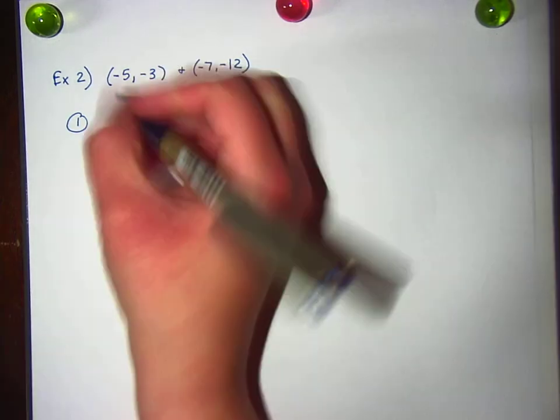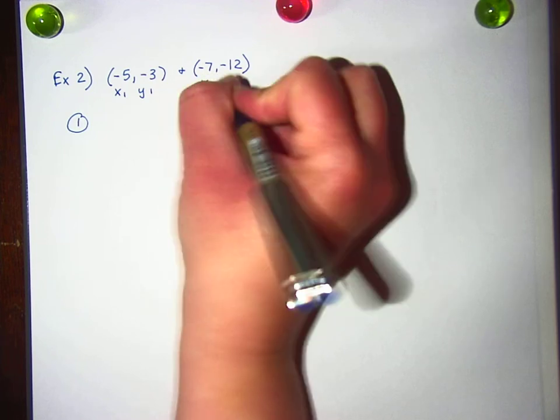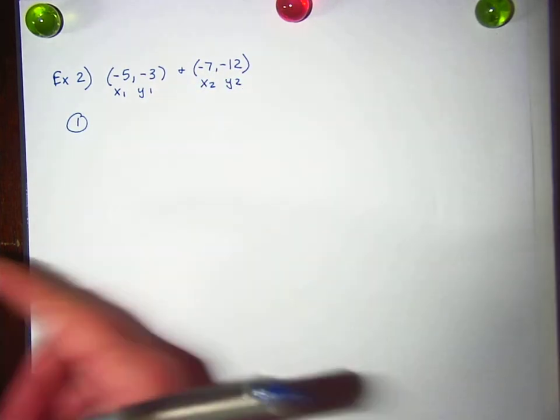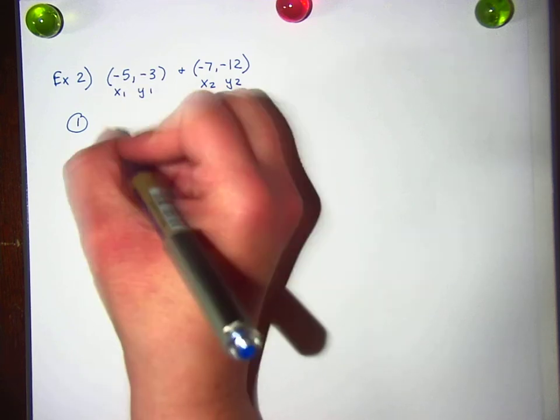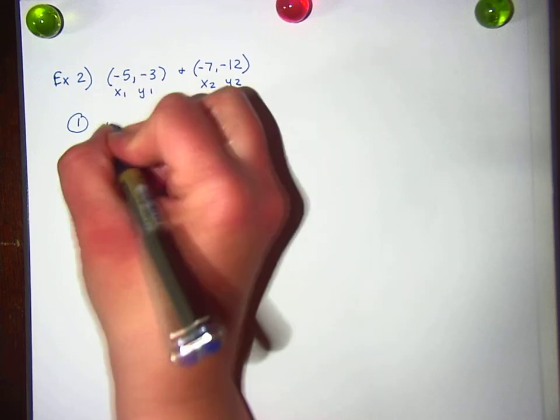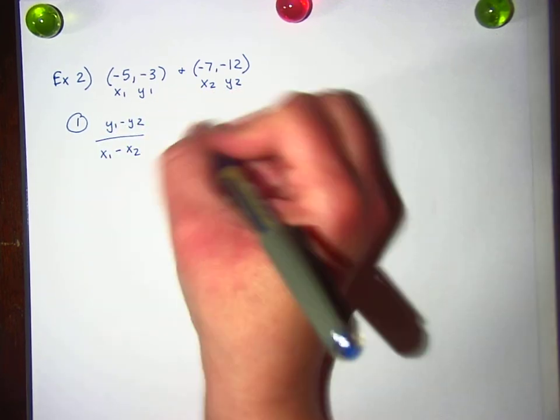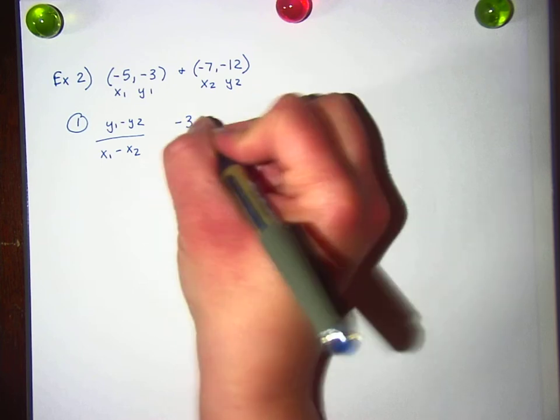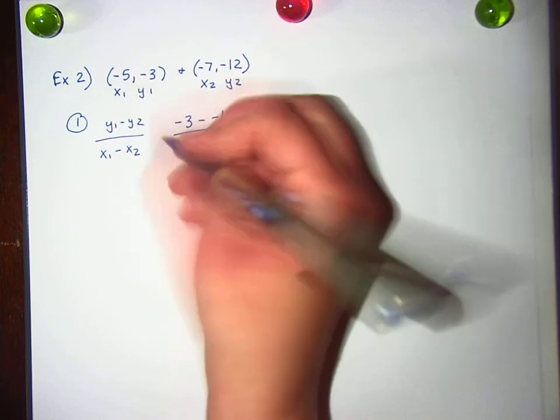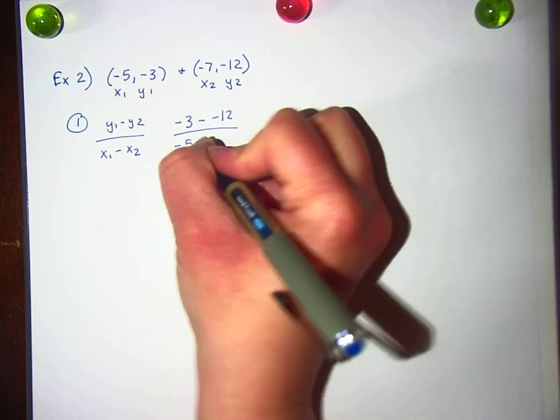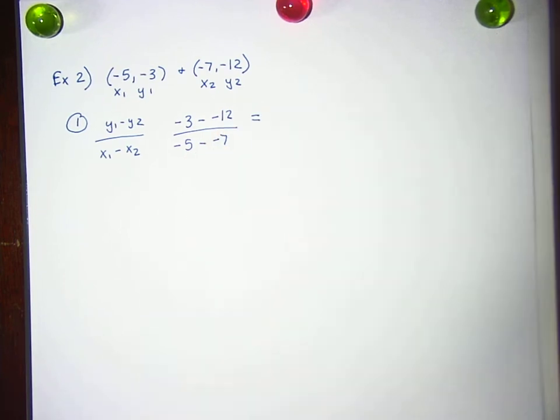Okay. So I'm going to call this point x1, this point y1. This one's x2, y2. It really doesn't matter which one's which. So it doesn't have to be the first one is the first point, whatever you want to do. All right. So y1 minus y2 over x1 minus x2. So y1 is negative 3 minus y2 is negative 12 over x1 is negative 5 minus x2 is negative 7. Those are some gross numbers.